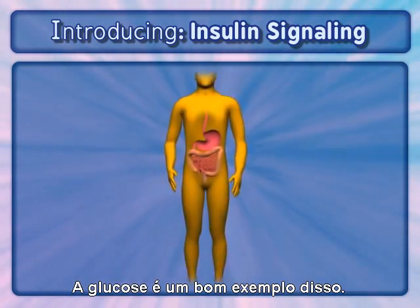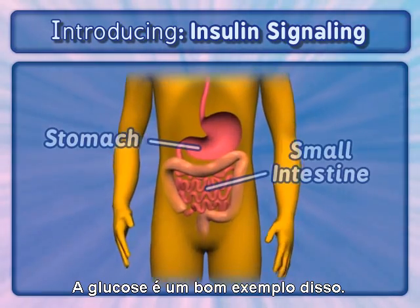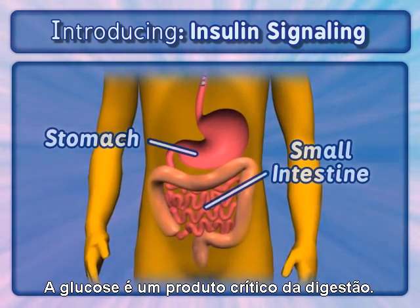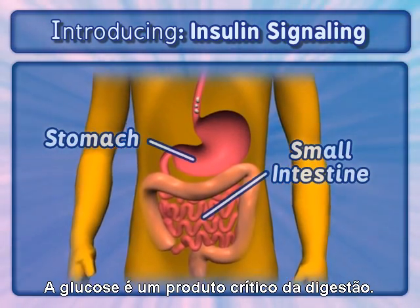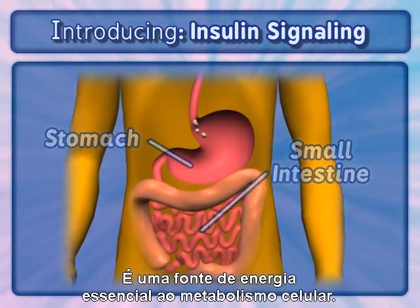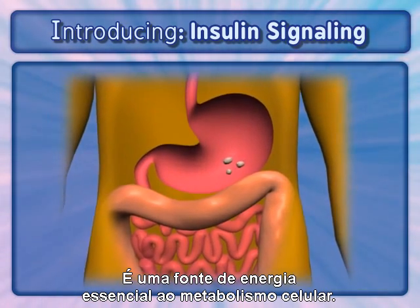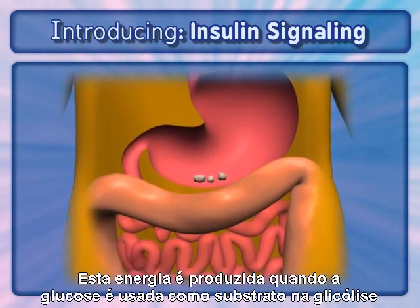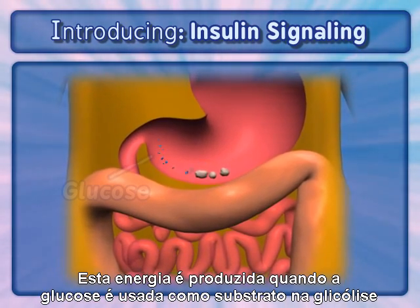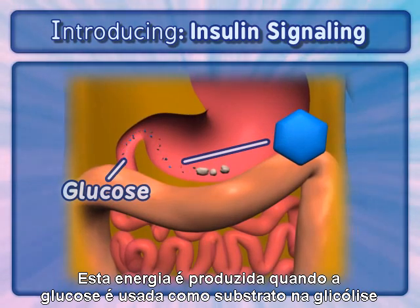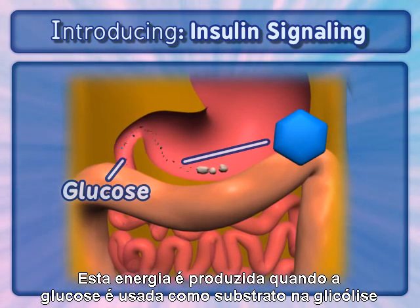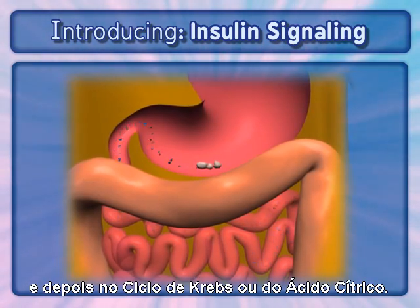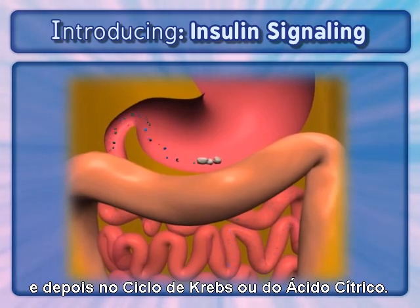Glucose is a good example. Glucose is a critical product of digestion and an essential energy source for cellular metabolism. This energy is produced when glucose is used as a substrate for glycolysis and then the Krebs or citric acid cycle.